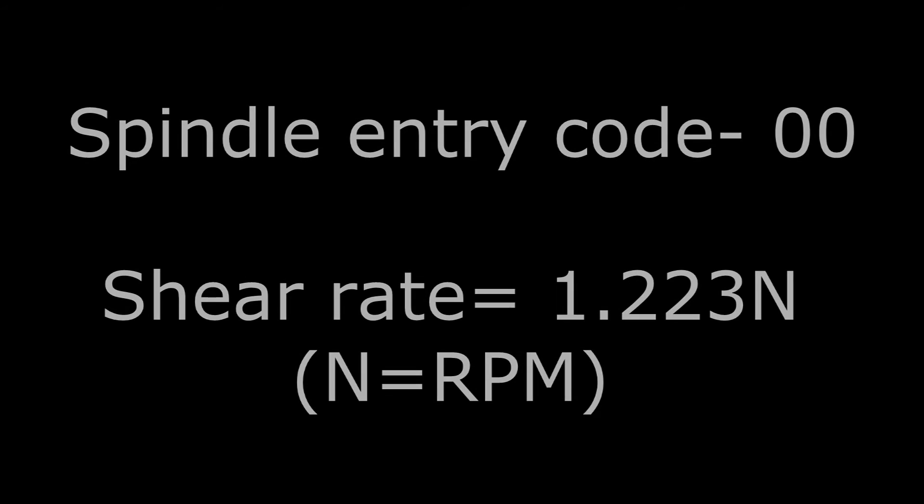The UL adapter spindle uses a spindle entry code of 00 and has a shear rate of 1.223n where n equals your rpms.